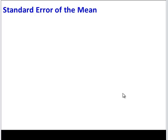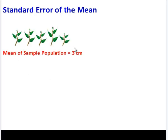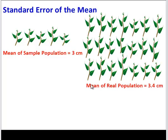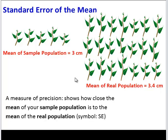Now let's consider validity. Here we have our sample population with 5 plants, and their mean height was 3 centimeters. But this is only 5 plants. How do we know that this small sample is representative of an actual population? Perhaps in the real population of many, many plants, the mean is 3.4 centimeters. We need a way of measuring just how close your mean is to the real mean, and we do that by calculating the standard error of the mean. This is a measure of precision — it shows how close your mean is to the real mean.